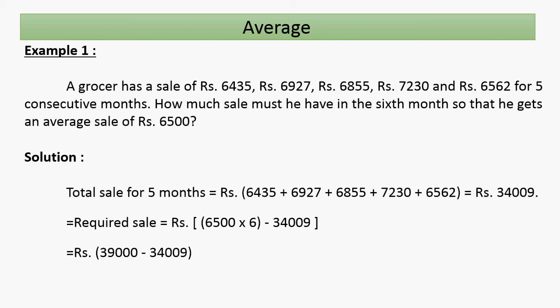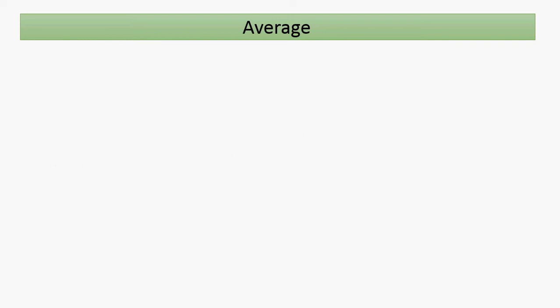So the sixth month's required sale is 39000 minus 34009, which equals 4991. That is our answer.